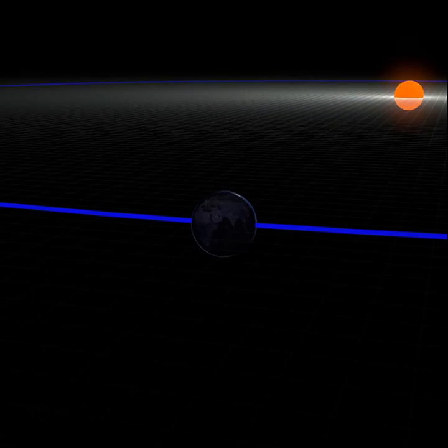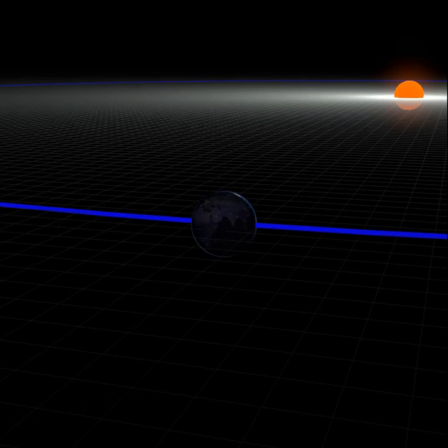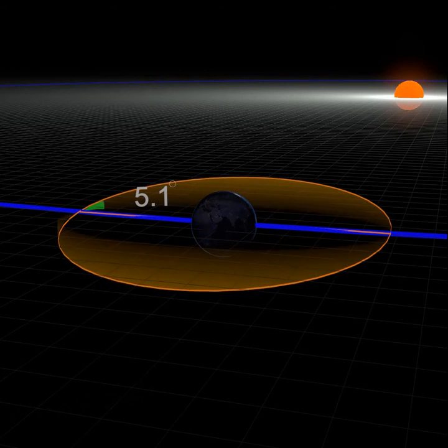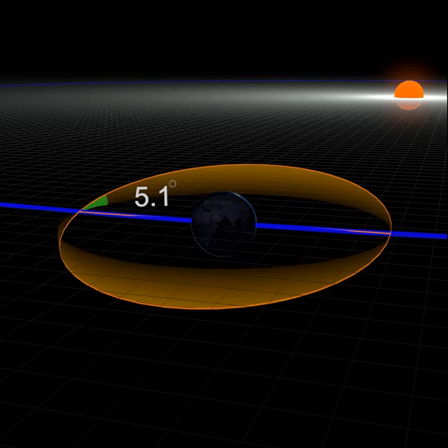Next we're going to put on the ecliptic plane. Finally, let's put on the moon's orbit and tip it 5.1 degrees. The moon's orbit's tipped out of the ecliptic plane.